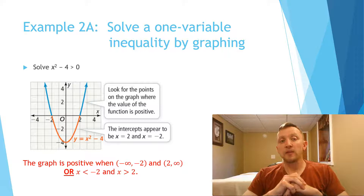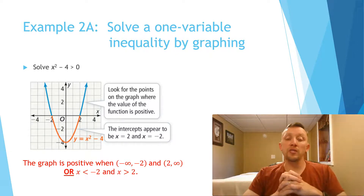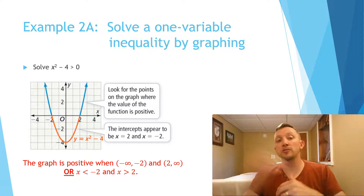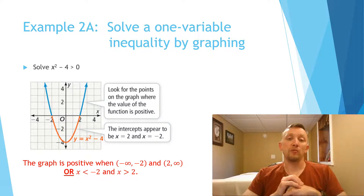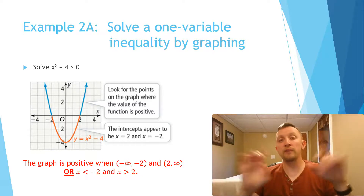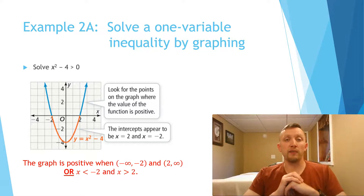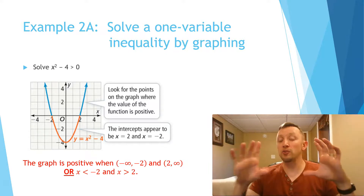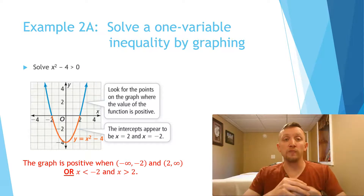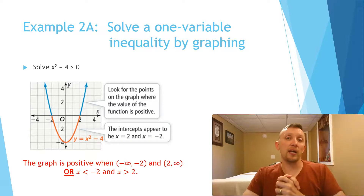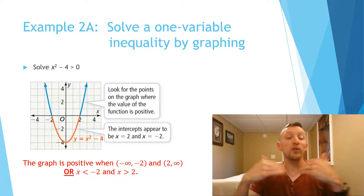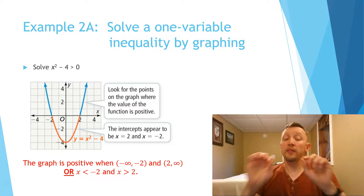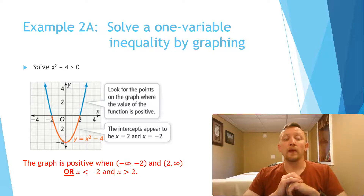The graph is positive from negative infinity to negative 2, and from 2 to infinity — those two parts. We could write this using inequalities: x is less than negative 2 and x is greater than positive 2. If it had said less than 0, we would have just one solution in interval notation: from negative 2 to 2, using parentheses because negative 2 and 2 are not included. If it said less than or equal to 0, those points would be included and we'd use brackets.